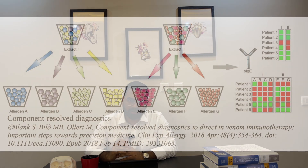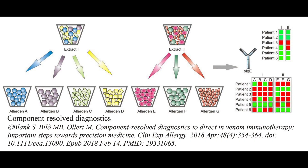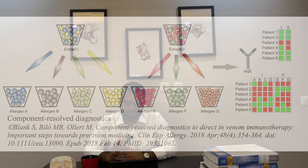Using crude allergens for detecting specific IgE levels may cause cross-reactivity between different allergens due to common components and proteins, leading to false positives. To solve this problem, recombinant allergens and proteins from specific allergens have been manufactured. This is known as component-resolved diagnostic testing, or CRD testing. This concept is also used for skin prick testing.